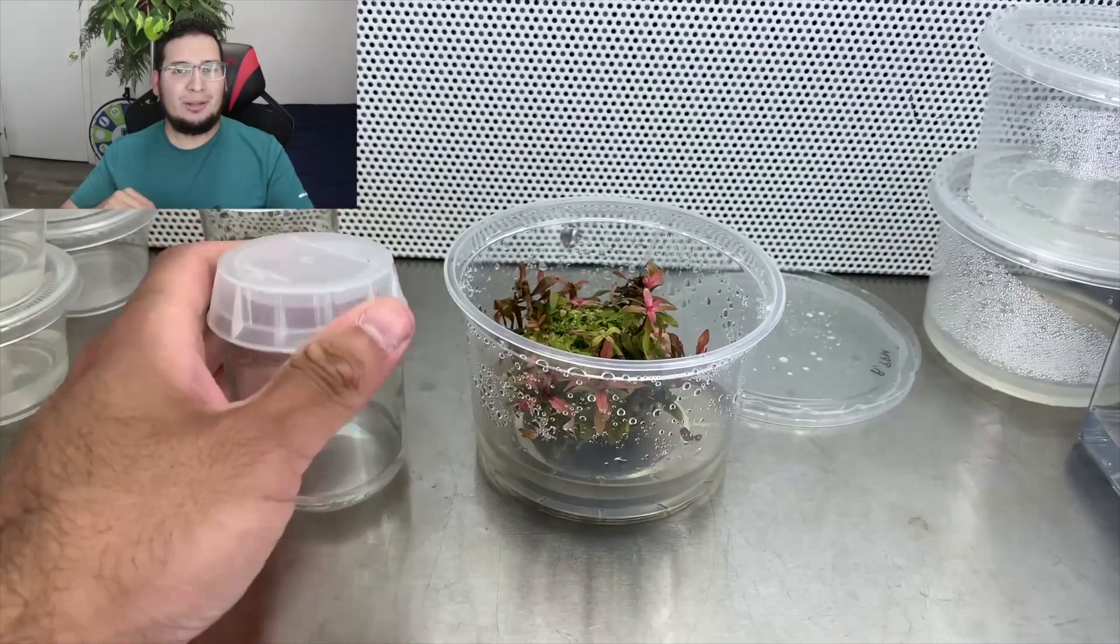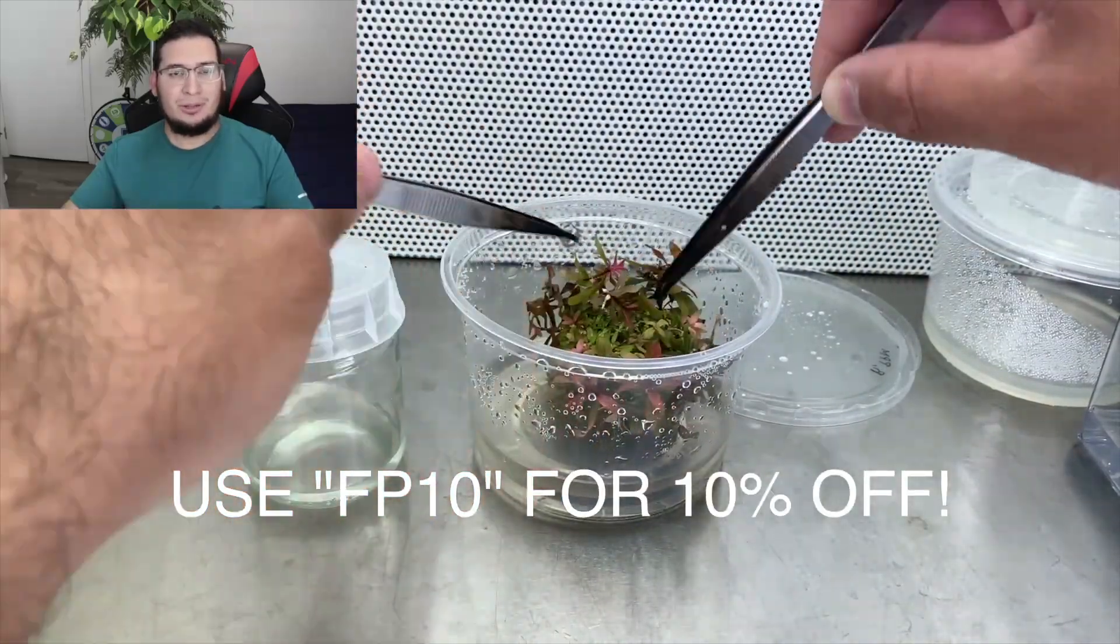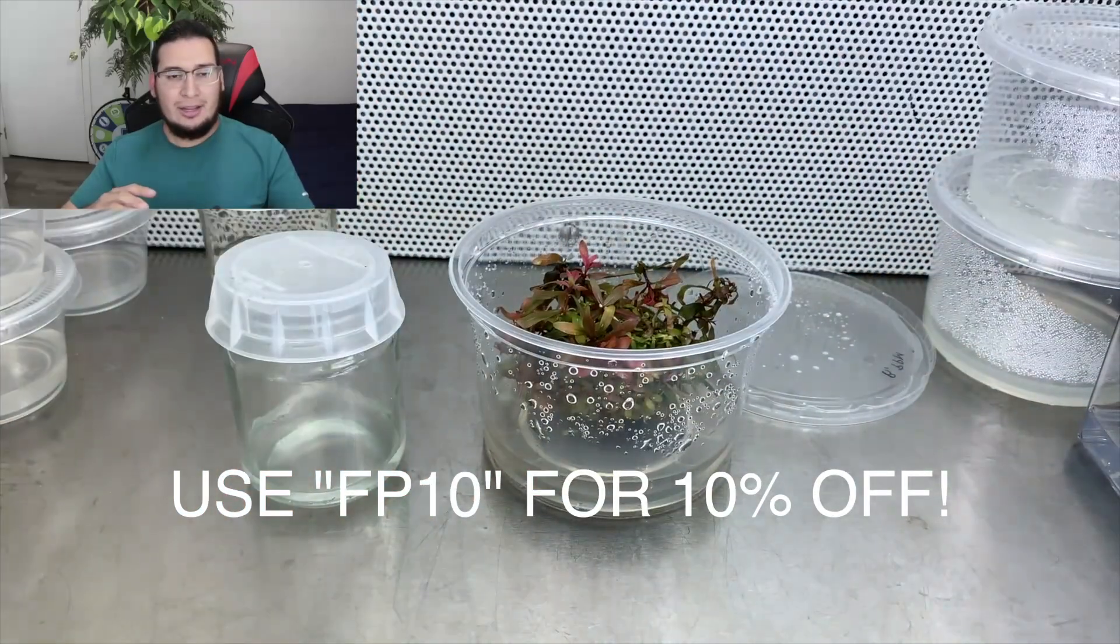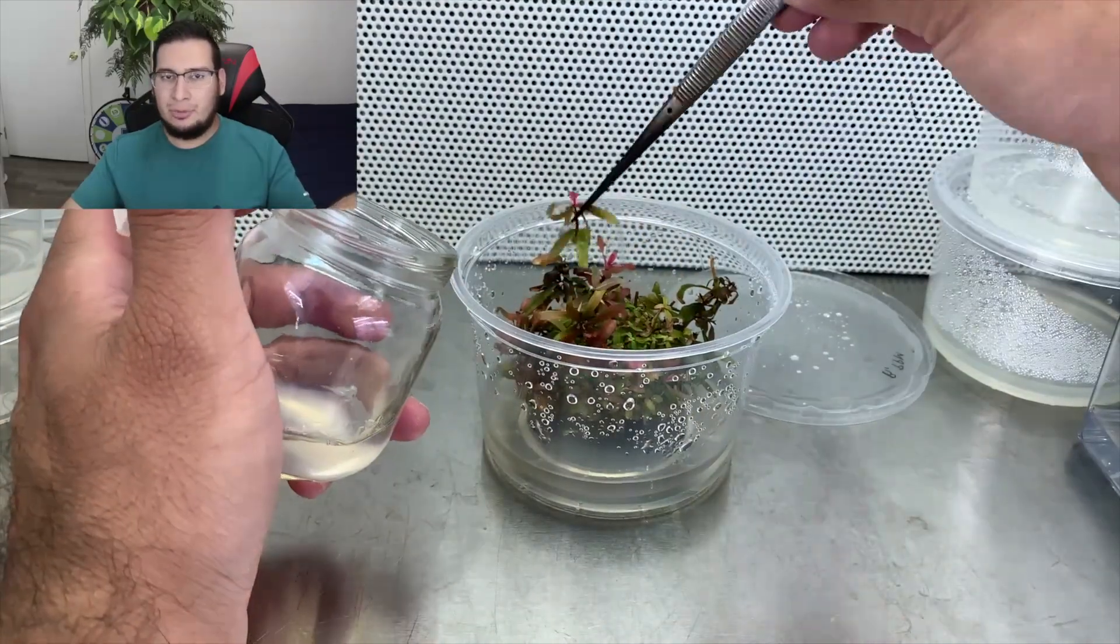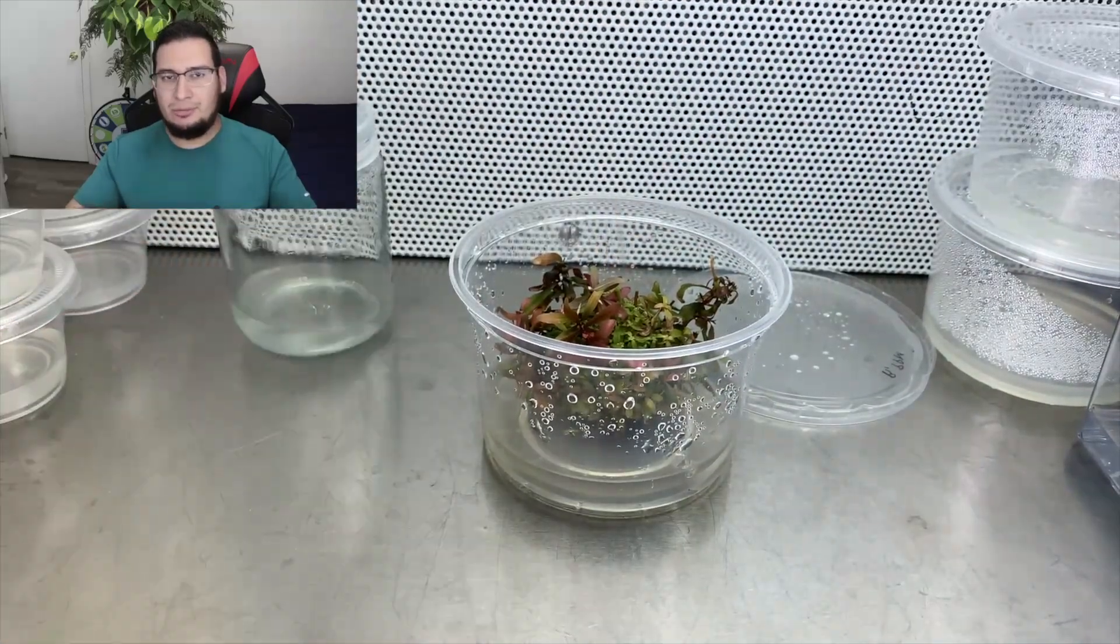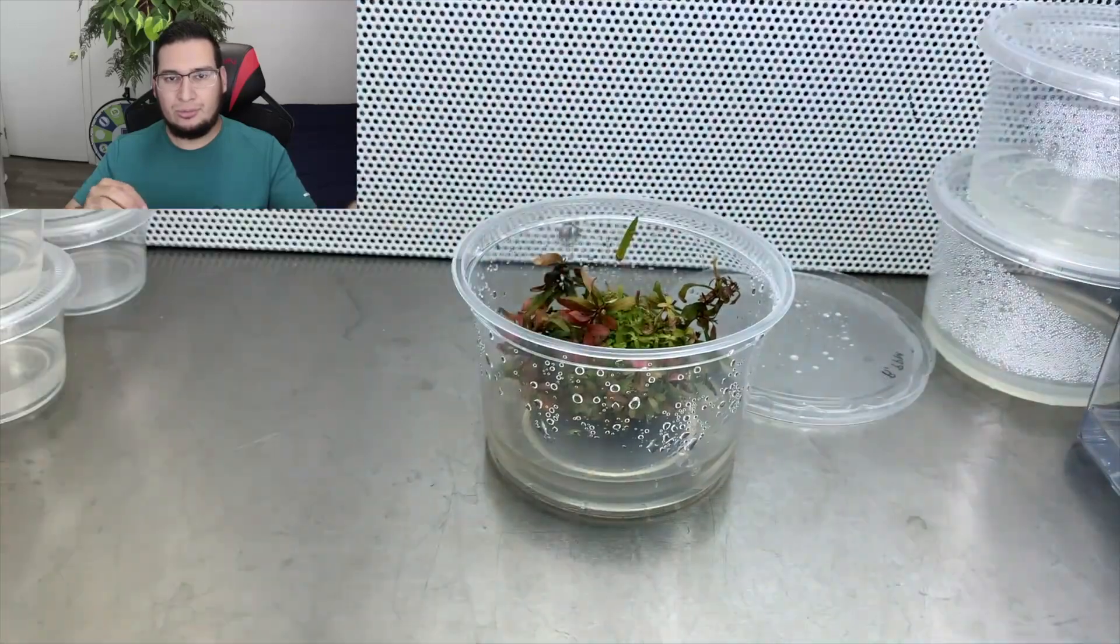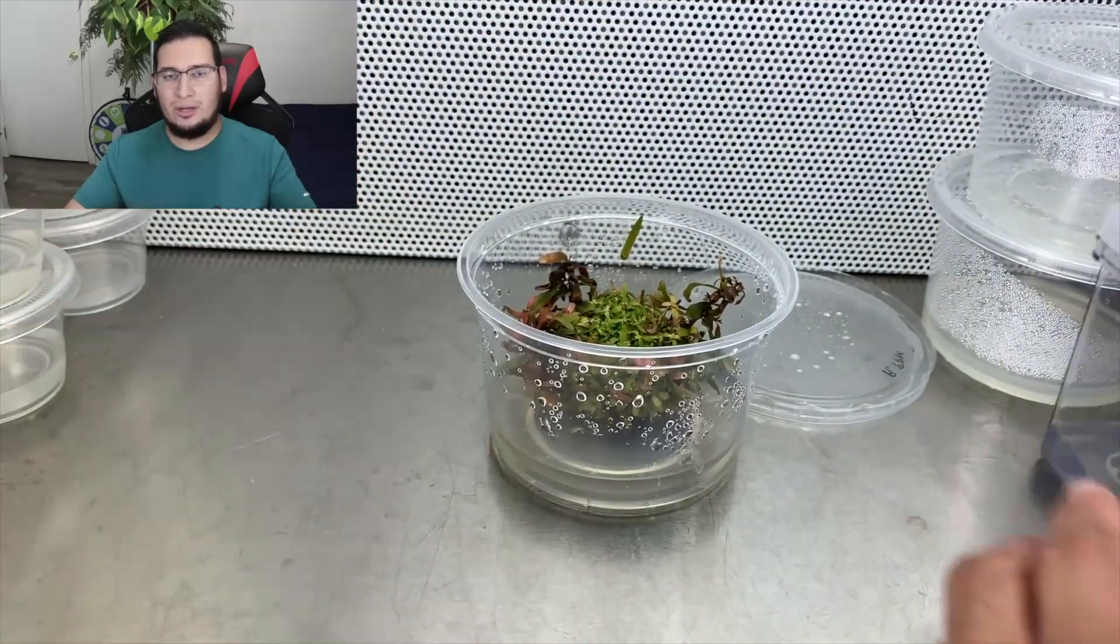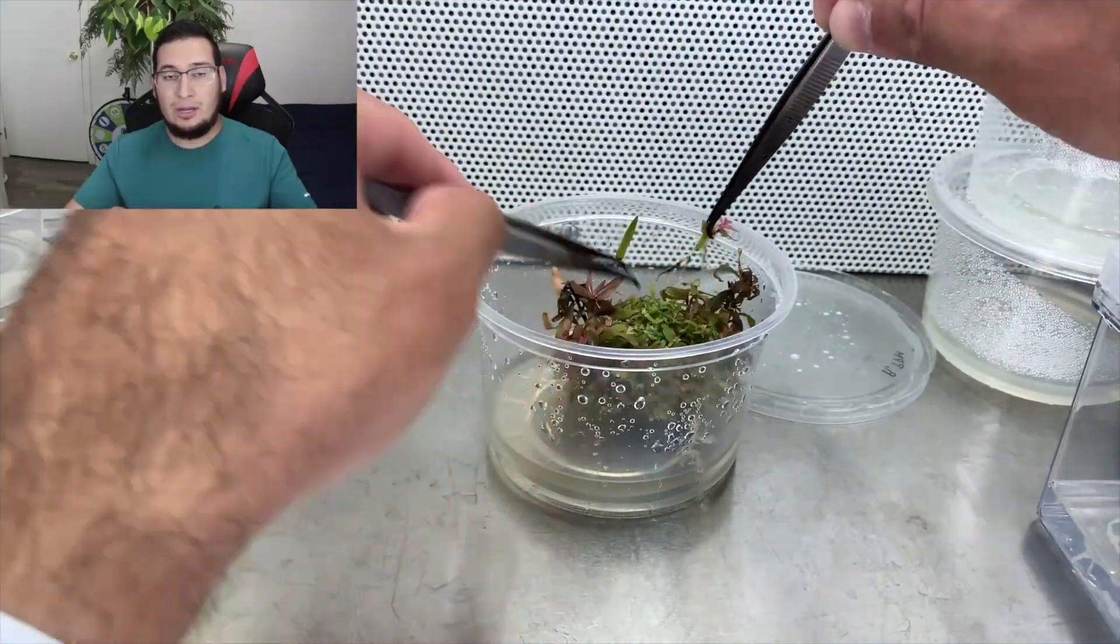What is going on guys, welcome back to another video on the temporary immersion bioreactors. This time I'm working with Ammania gracilis. For this video I'm not going to show you the entire process. Basically you've seen the previous video, you already know what is happening. I'm just moving the plant to different types of containers and trying to see what works best for each plant.